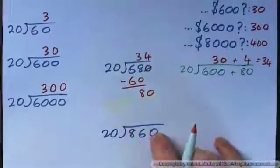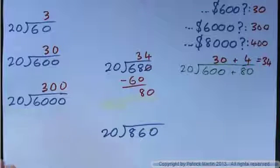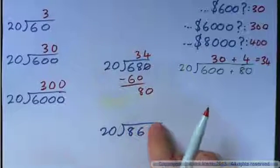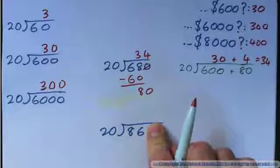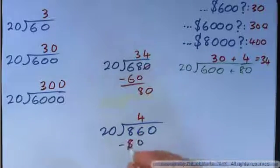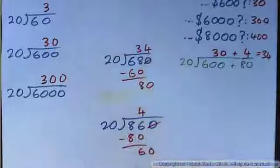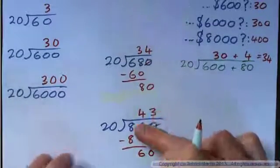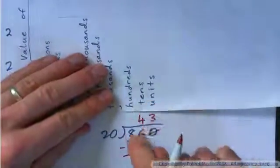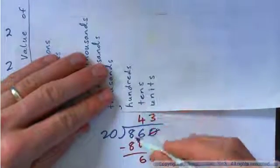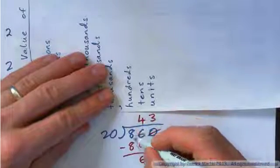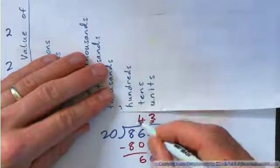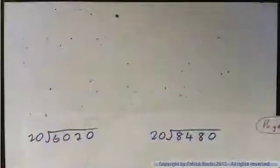Go ahead and do $20 into $860 yourself. You start with $20 into $86 — that's 4 times. 4 times $20 is $80, subtract and get $6, bring the $0 down. Now $20 into $60 goes 3 times. What really happened: $20 into $800 goes 40 times, $20 into $60 goes 3 times, and $40 plus $3 makes $43. Anyway, let's go to page 2.